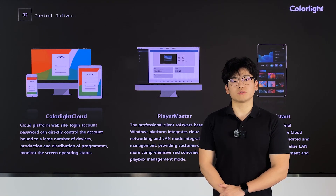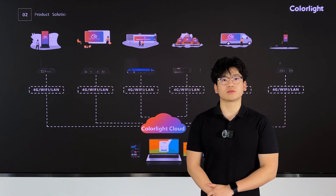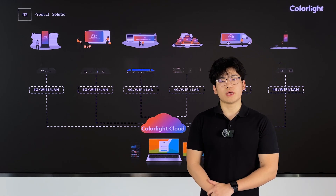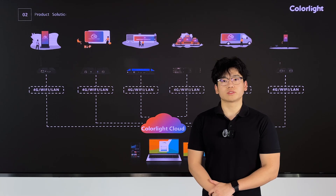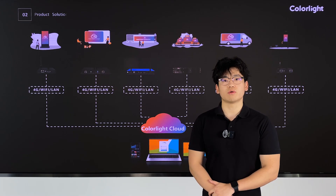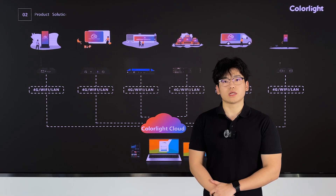This is the system topology diagram of our cloud-connected product. As we can see, it consists of three main components: the cloud player devices, the cloud platform, and the control software. At the top, there are six different signals, each with screens of varying sizes, using different devices for load management. All devices are connected to our cloud platform via the network. The control software accesses the cloud platform to enable unified management of all devices.